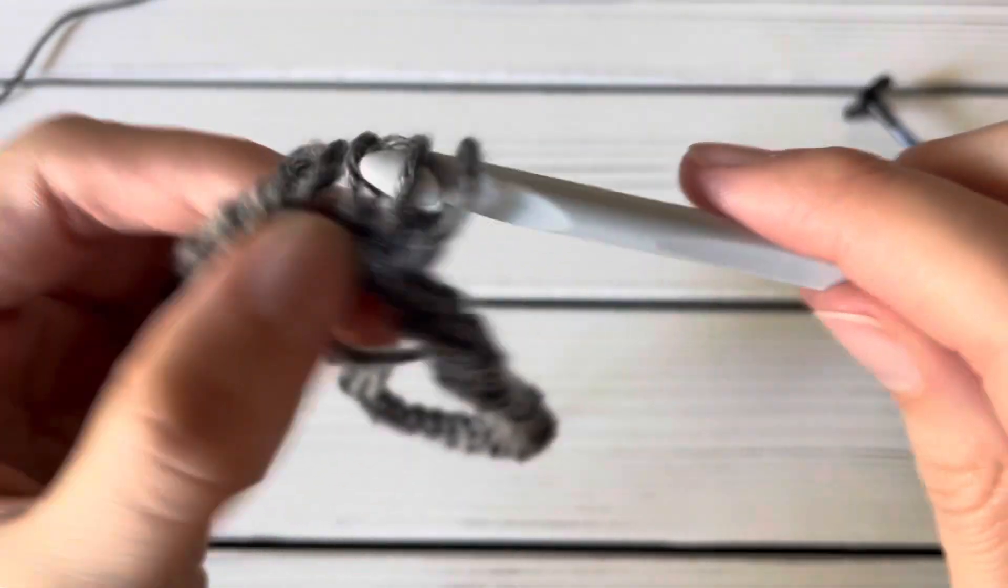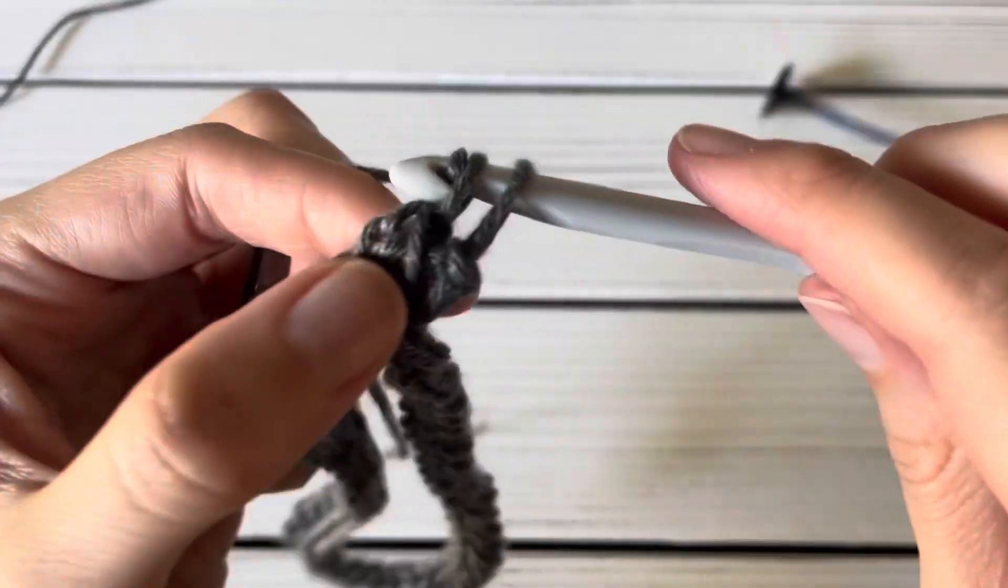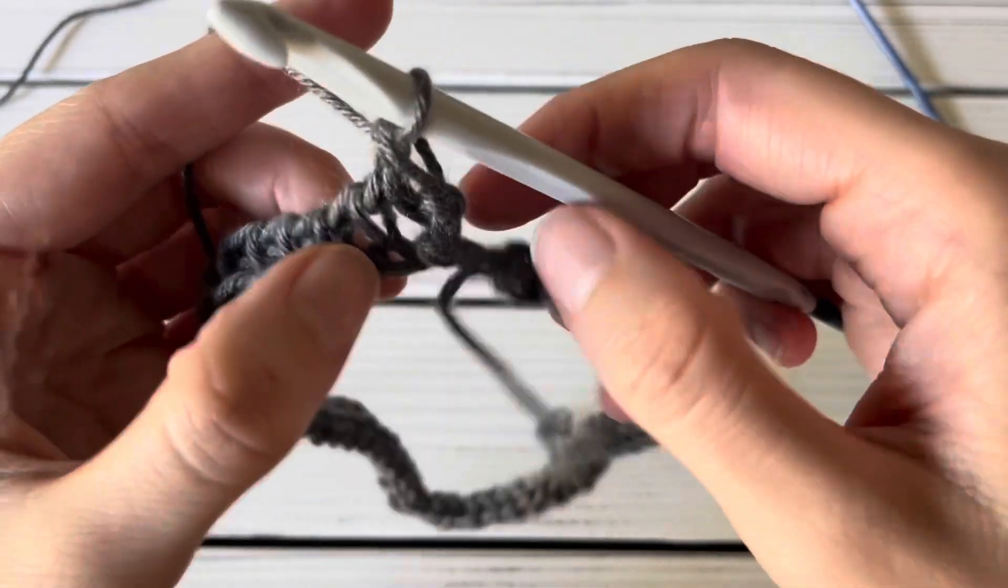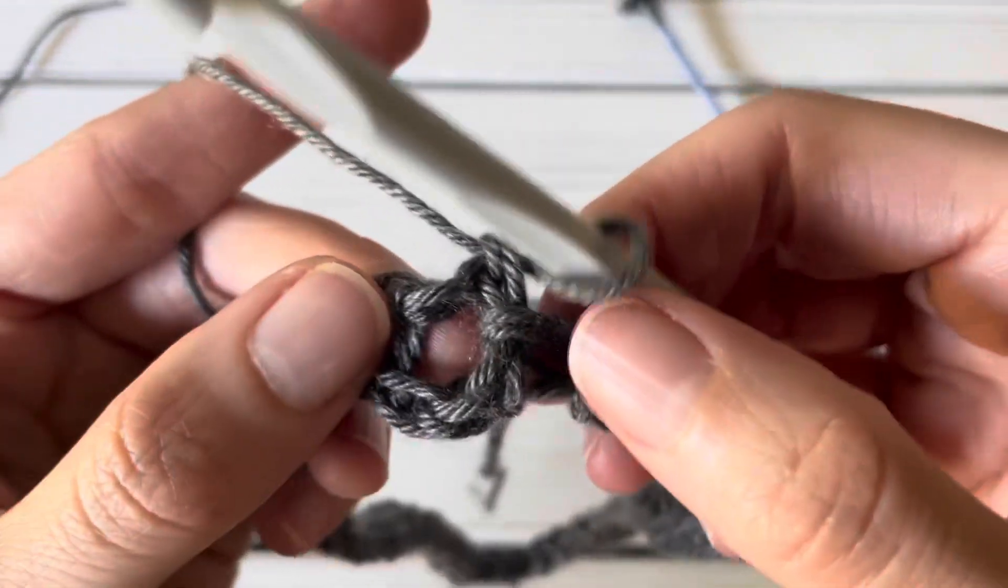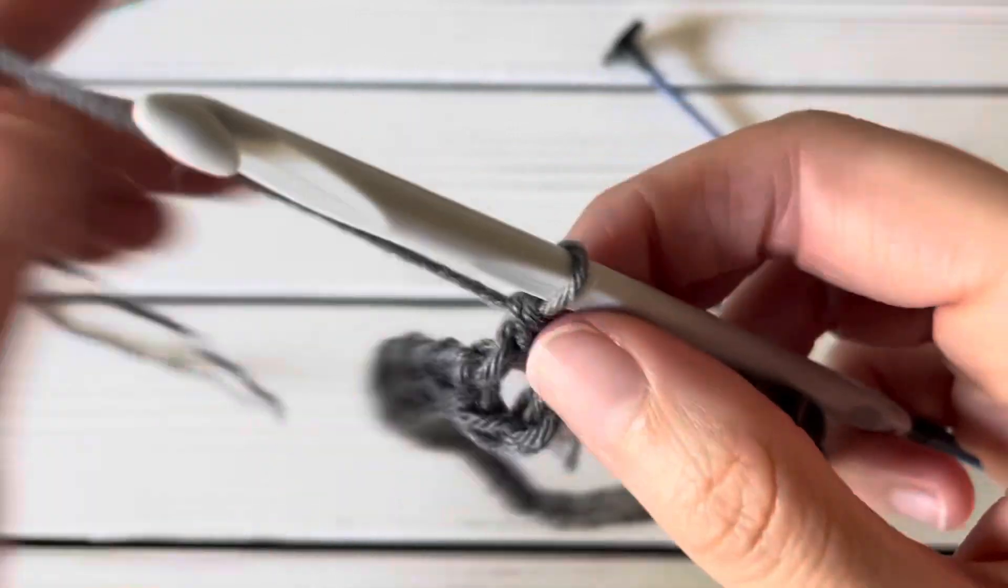I am almost done with my return pass. You should yarn over and pull through two until one loop is left on your hook. And then I like to adjust that join there so it's around those two loops.